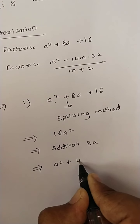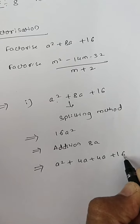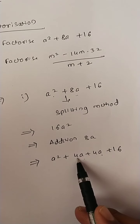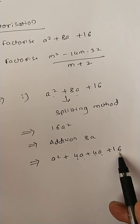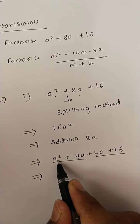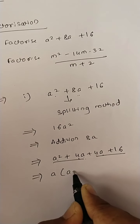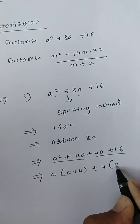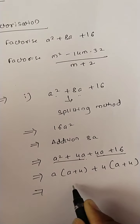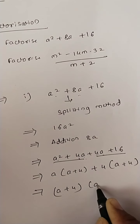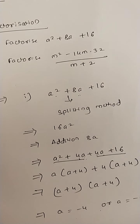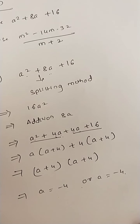So I will choose a square plus 4a plus 4a plus 16. If I do addition, 4a plus 4a gives 8a, and 4a into 4a gives 16a square. Now I separate these two groups and remove common factors. From a square plus 4a, a is common: a(a plus 4). From 4a plus 16, 4 is common: 4(a plus 4). So a(a+4) plus 4(a+4) gives (a+4)(a+4), and a is equal to minus 4.